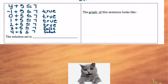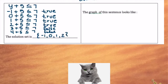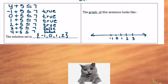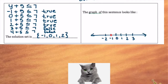Our solution set consists of the values that make the statement true. So our solution set is {-1, 0, 1, 2}. To graph that solution, we put it on a number line. I'll make an evenly spaced number line with 0, 1, 2, 3, and negative 1, negative 2 — going a little beyond what I need to show scale. Then I put a dot on negative 1, a dot on 0, and dots on 1 and 2.